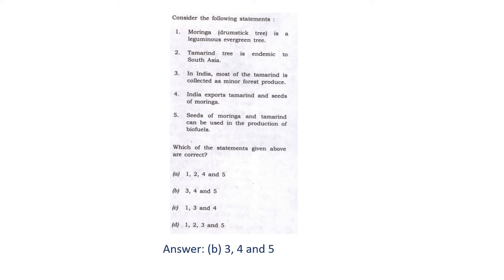Let's see statement 3. Here, tamarind is classified as a minor forest produce, and it is also covered under the Minimum Support Price scheme. So statement 3 is correct.